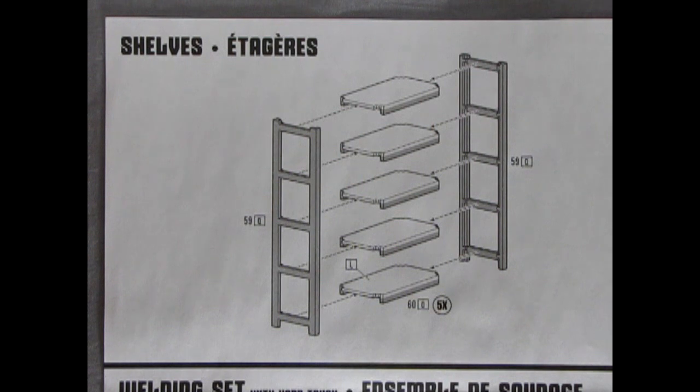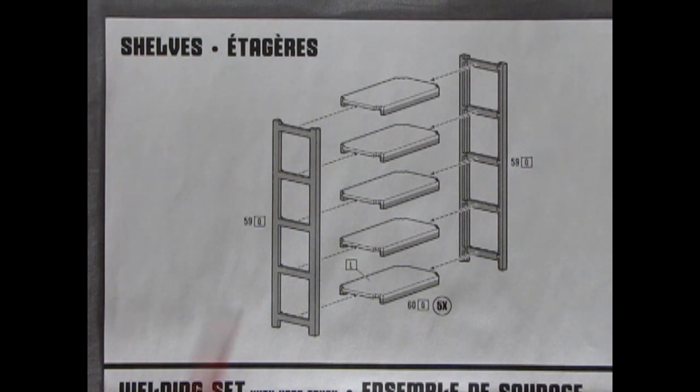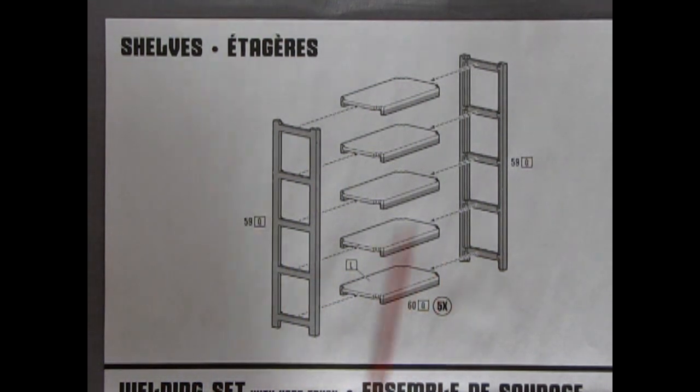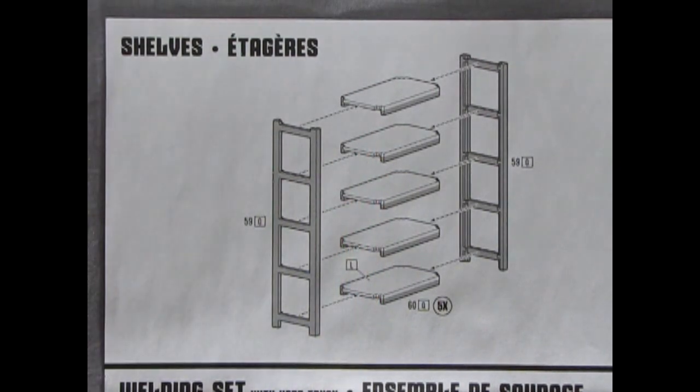Now, as anyone who has ever moved into an apartment or started their own business knows, the first thing you really need are some shelves. And here we have two outer racks as well as five shelves.